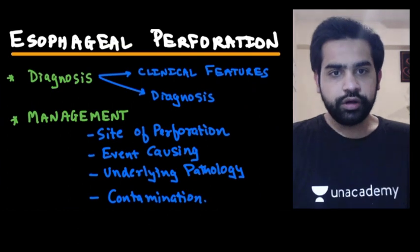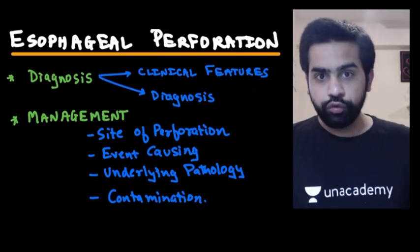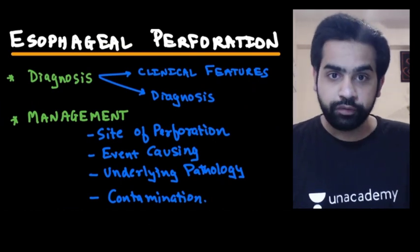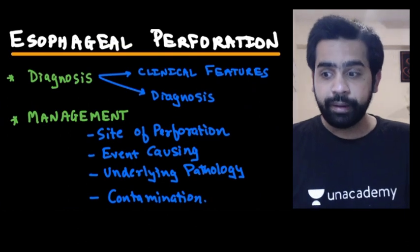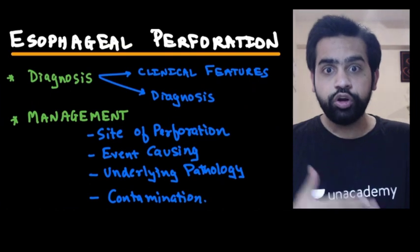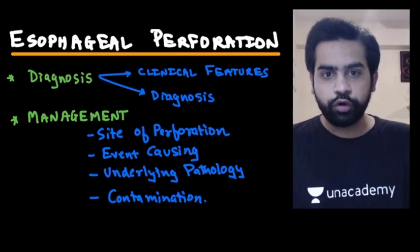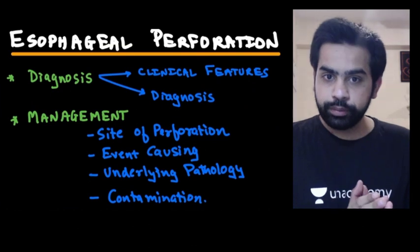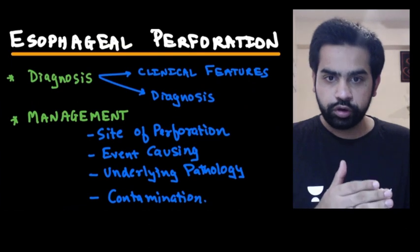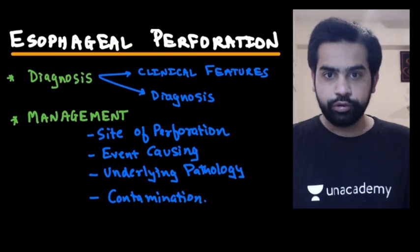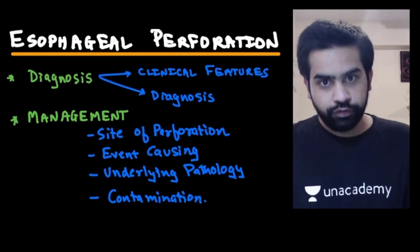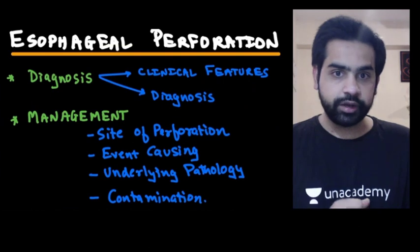If you suspect esophageal perforation, how do you diagnose it? You go for a dye study. Which dye? Not barium — barium might cause mediastinitis. You first go for a water-soluble dye. If the water-soluble dye does not pick up the perforation, then you move on to barium. And if you do use barium, you always use diluted barium for this study.